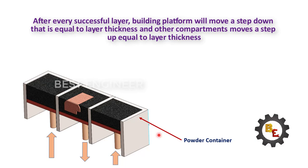Initially, compartment 1 and 3 pistons will be at bottom and the second piston is called object building platform. Initially, it will be at top.